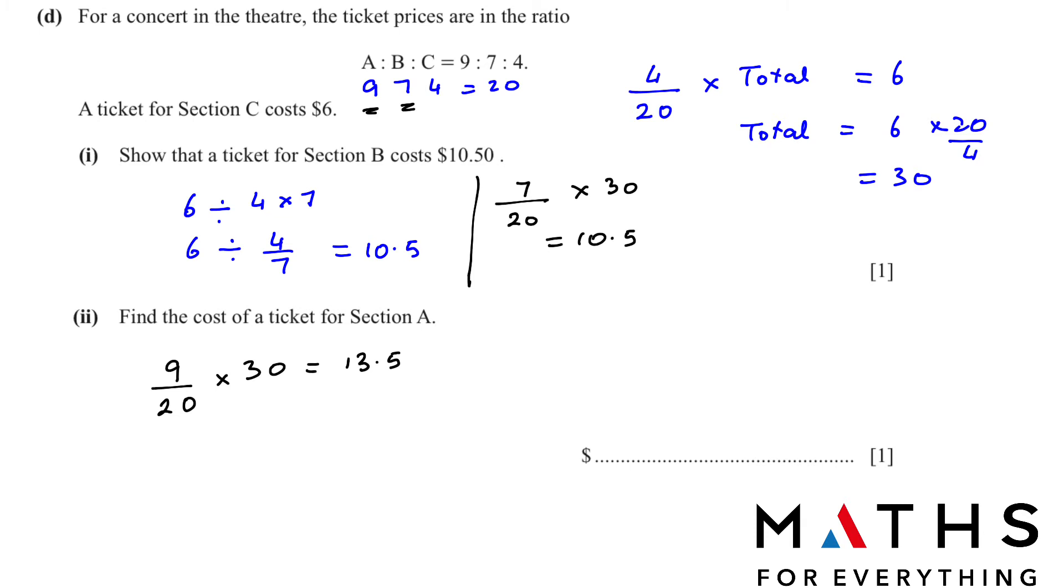To find the cost of a ticket for section A, A has parts 9, so 9 over 20 multiply by 30. You will get the answer 13.5. You can use the second method or you can use the first method. In the first method we got the cost of a C section which is 6 divided by how many parts of C? 4. And how many parts of A? 9. This will also give you 13.5.